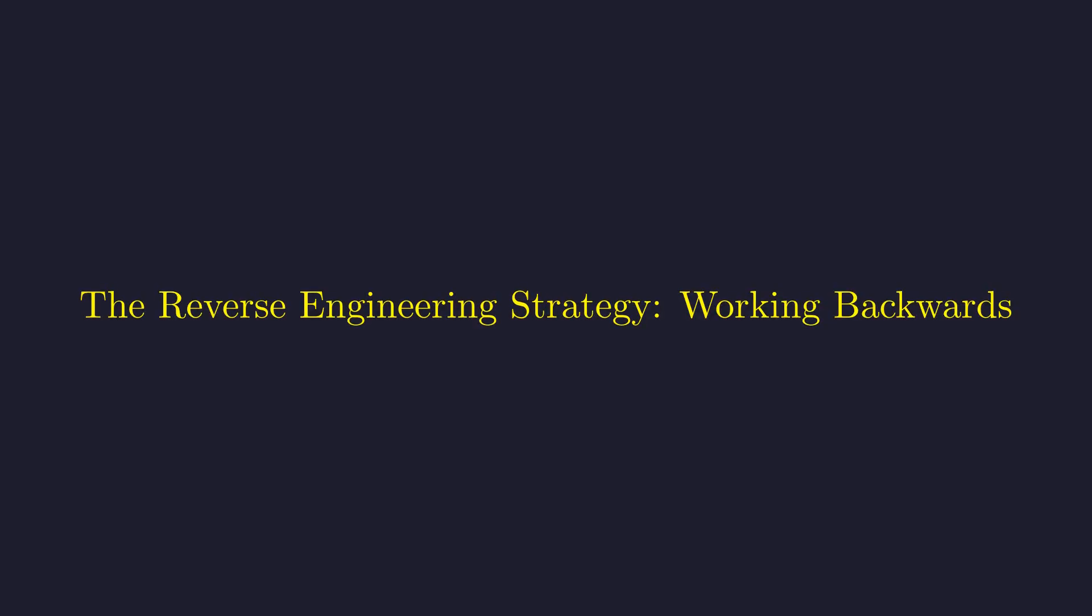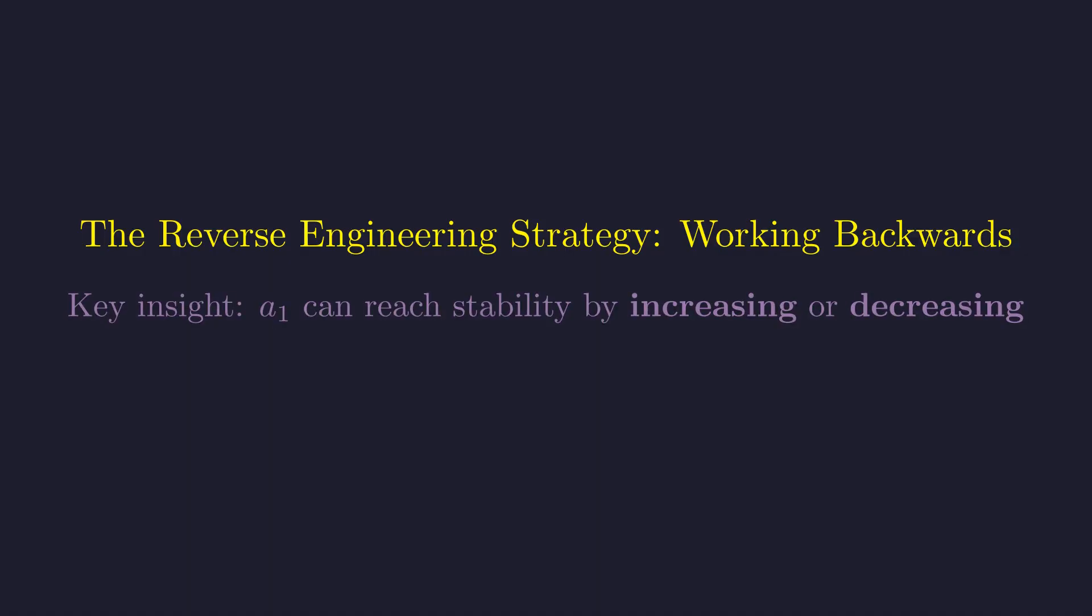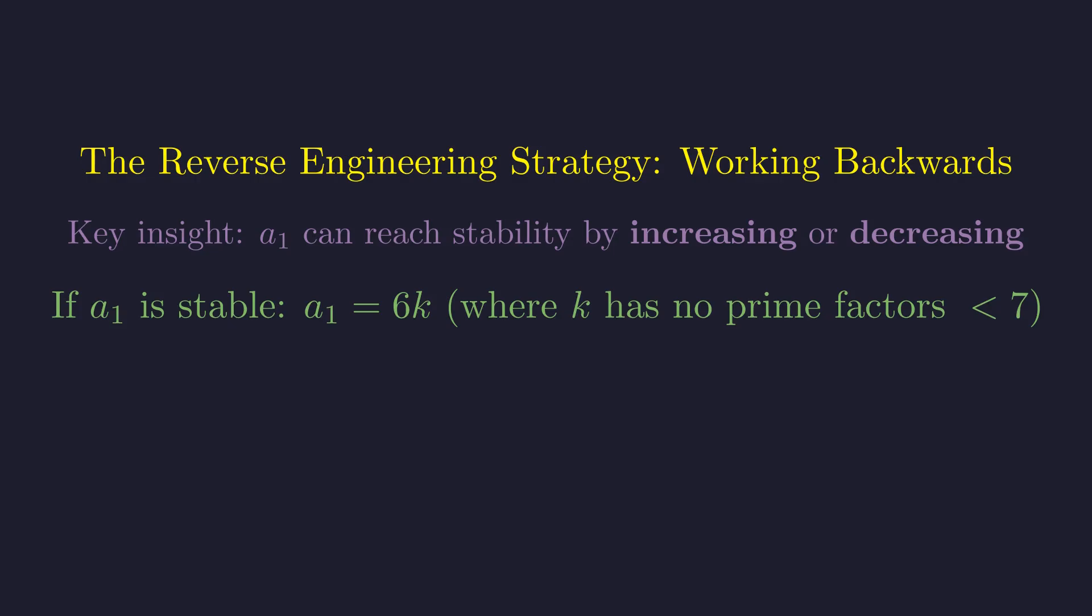We've characterized the stable numbers, which are possible values for A1. However, A1 could also be a number that is not stable itself but leads to a stable number. We can find these numbers by working backwards. The first set of solutions are the stable numbers themselves. If A1 is stable, the sequence is constant from the start. The second set of solutions are numbers that become stable after one or more steps.